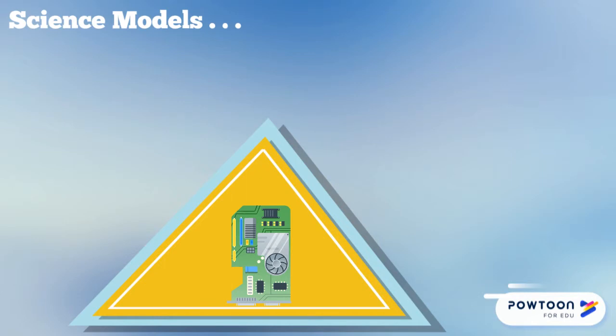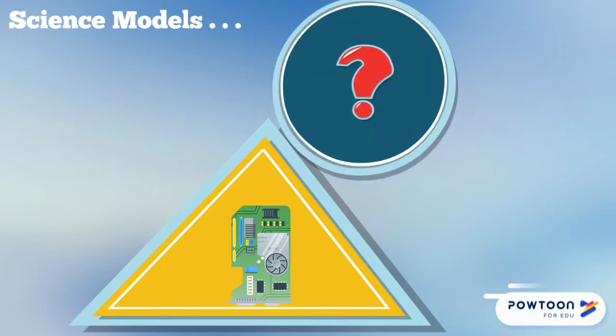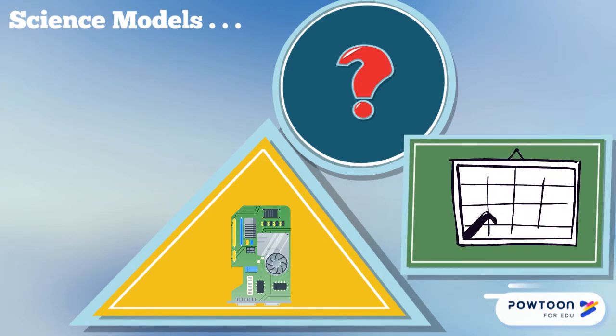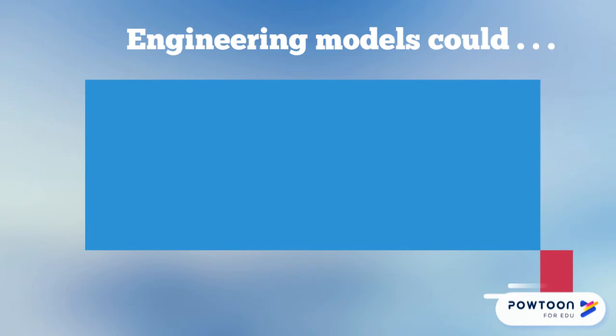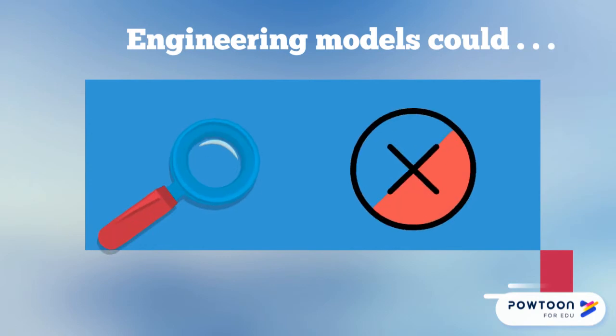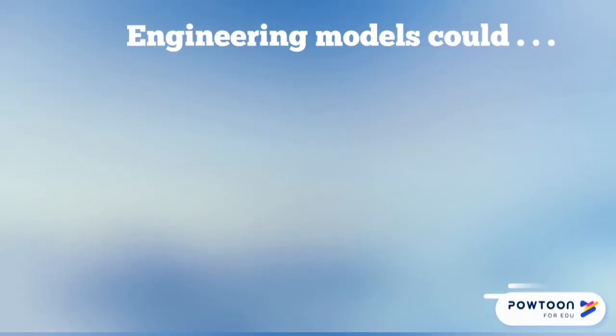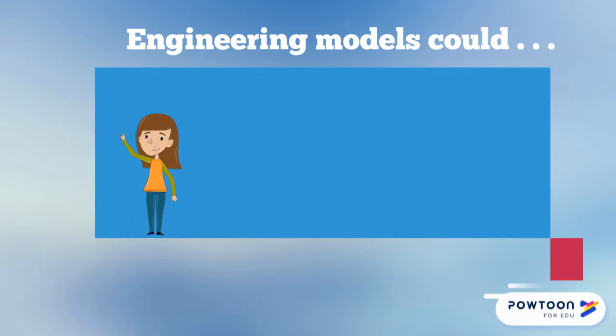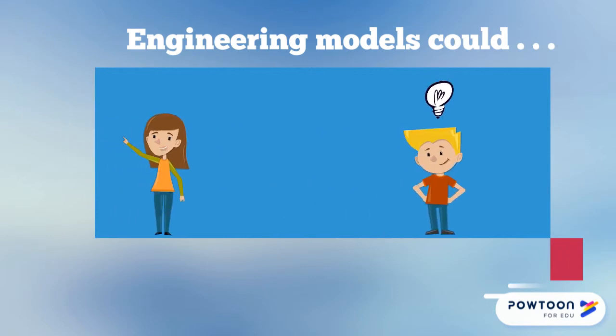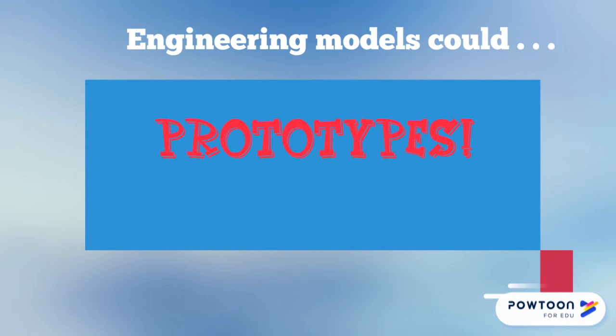So what do science models do? They represent a system or parts of a system under study. They aid in the development of questions and explanations. They generate data that can be used to make predictions. And they communicate ideas to others. Engineering models could analyze a system to see where or under what conditions flaws might develop, test possible solutions to a problem, visualize and refine a design to communicate a design's features to others, or be prototypes for testing design performance.